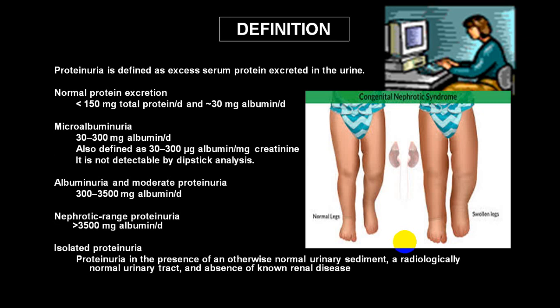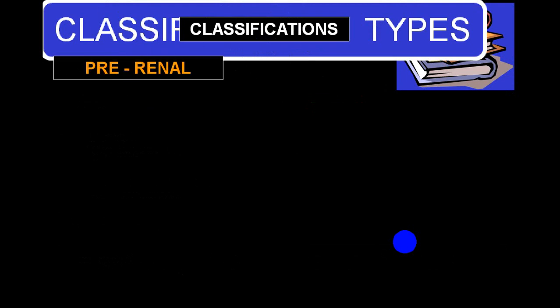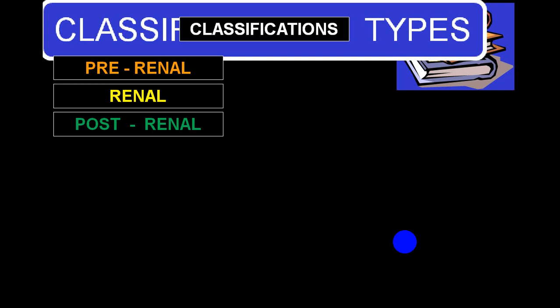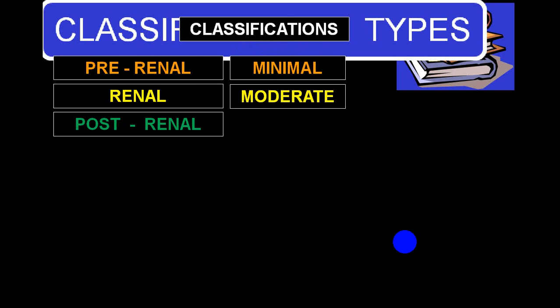There is something called isolated proteinuria, which means presence of otherwise normal urinary sediments, radiologically normal urinary tract, and absence of known renal disease — also called primary proteinuria. By classification, depending upon etiology, we call it pre-renal, renal, or post-renal causes such as pelvis, ureter, bladder, prostate, and urethra.